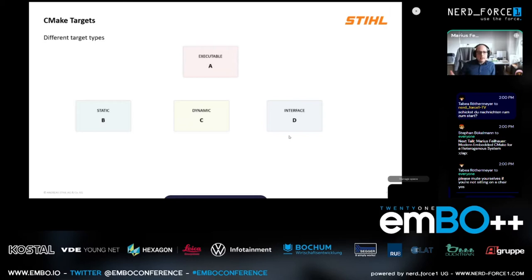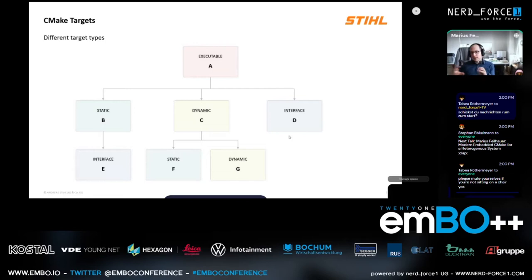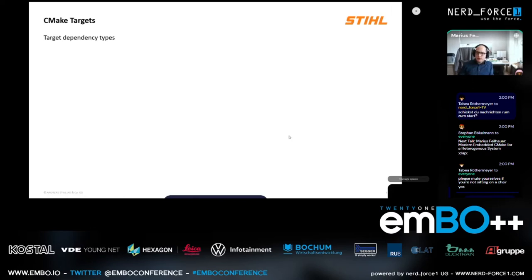Those different targets can depend on each other. So you can have executable target A depending on static targets B, C, and D, which themselves can depend on other target types. Those are the main building blocks of what CMake is made of. Every target can have source files, compiler flags, include directories, et cetera.